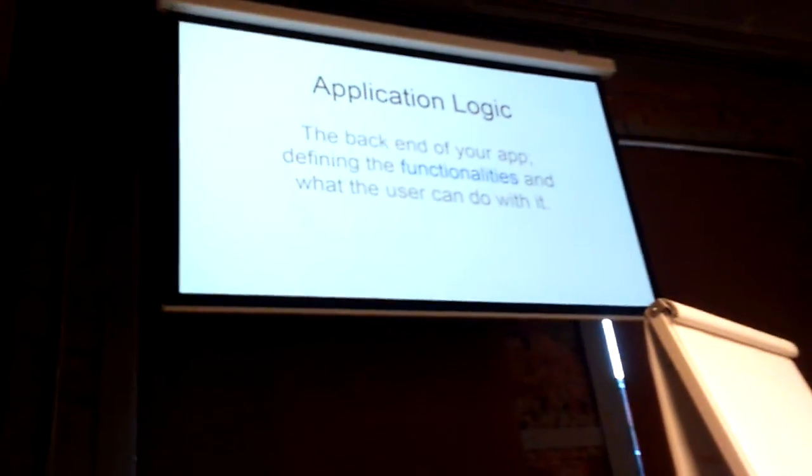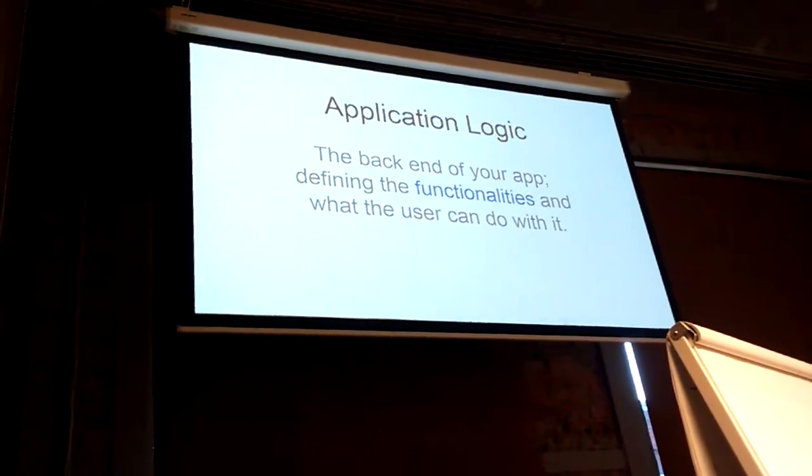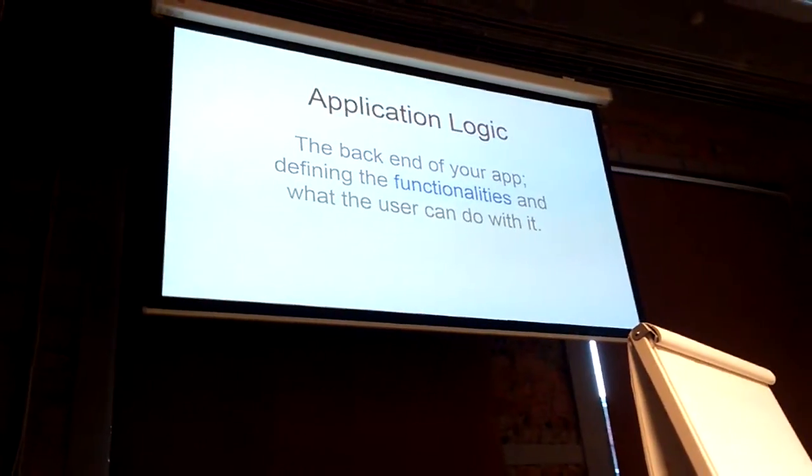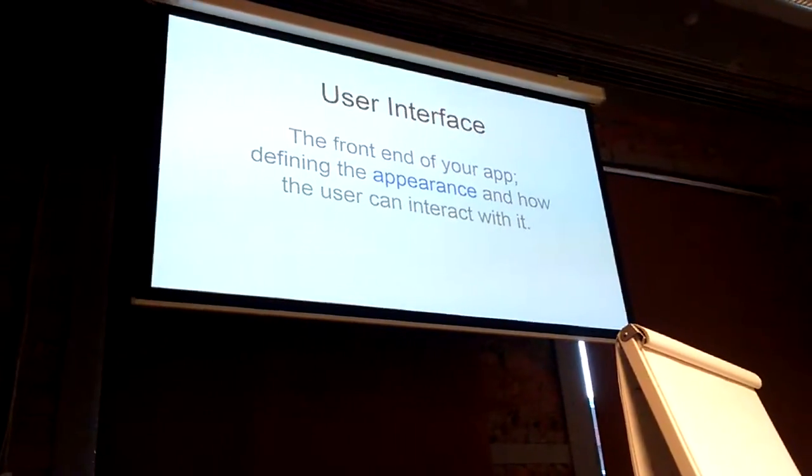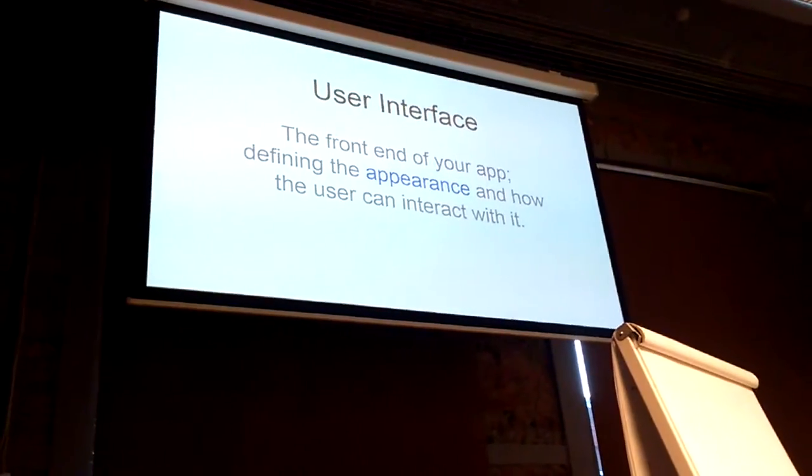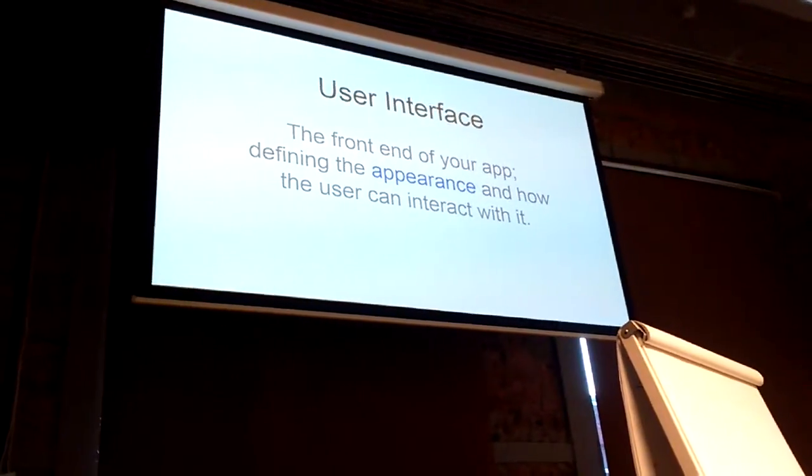This allows a lot of different use cases. In terms of the social network example, you now have a social network where all data, once input, cannot be deleted anymore. Facebook, for example, can simply delete your images, text, or status updates — but in this example that wouldn't be possible. The application logic is the back-end of your app where you define functionalities and what the user can do, and the front-end user interface defines how it looks and how the user interacts with it. So these are blockchain apps: you have the front-end, the back-end, the blockchain, the decentralized storage, and the consensus algorithm.